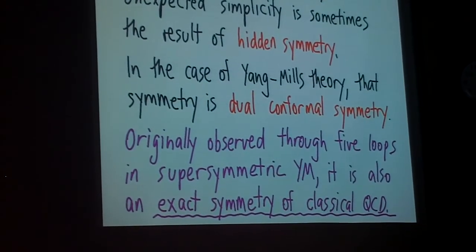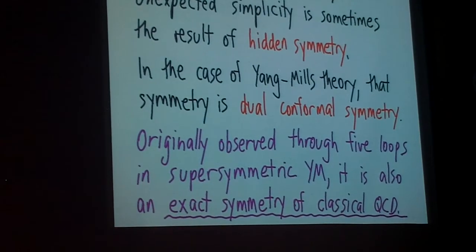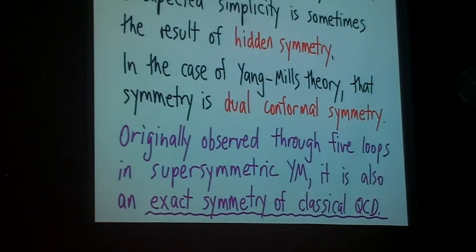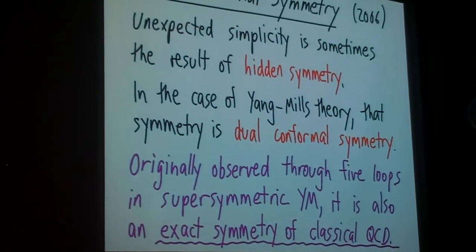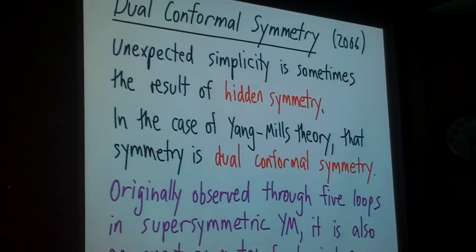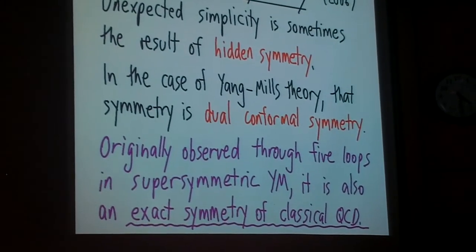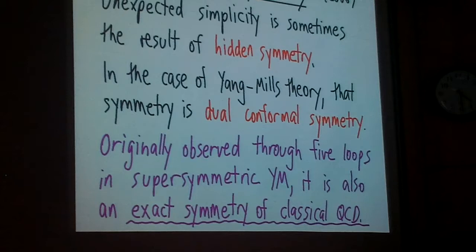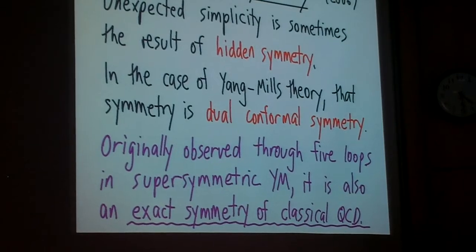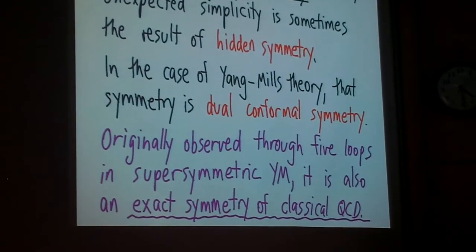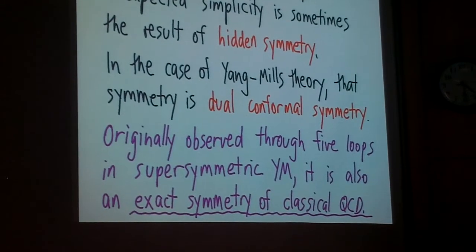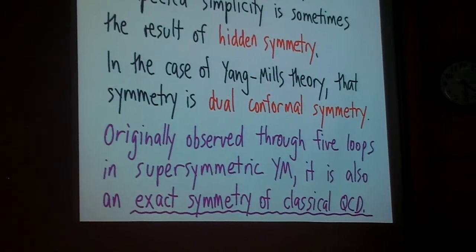Now, originally, dual conformal symmetry was actually observed in supersymmetric Yang-Mills theory, because people looked at the classes of diagrams which contributed to the amplitude up through five loops, and remarkably, the graphs all shared some very peculiar graph theoretic properties, which puzzled people at first, until they realized that those particular properties could be explained if you hypothesized something called dual conformal symmetry, which I'll explain on the next slide. But remarkably, it's also an exact symmetry of classical QCD that has remained hidden, unknown, for many decades.